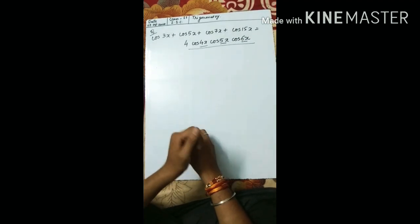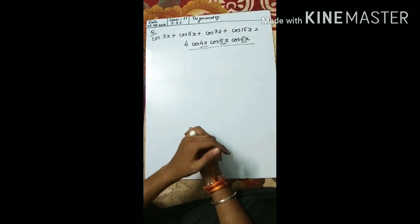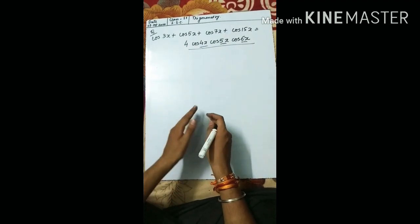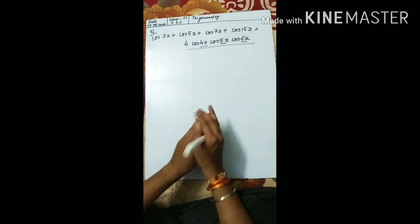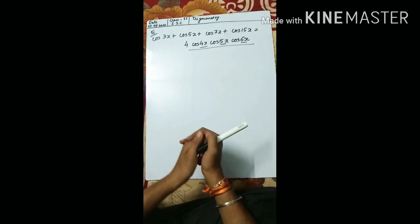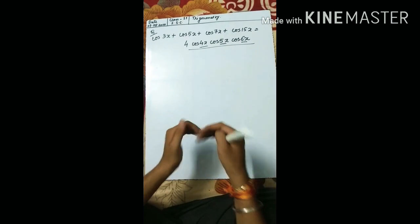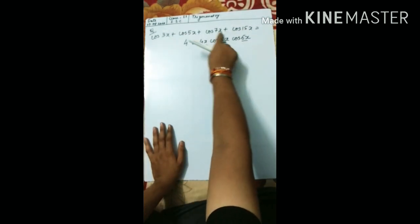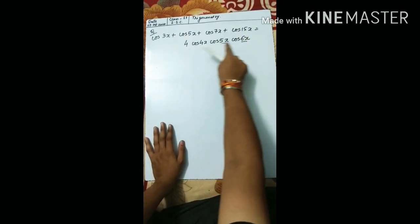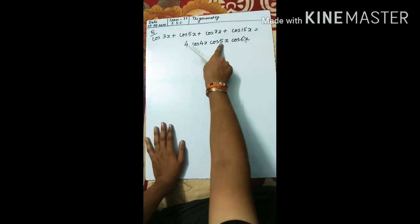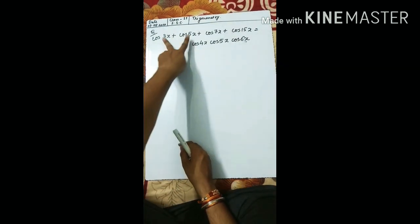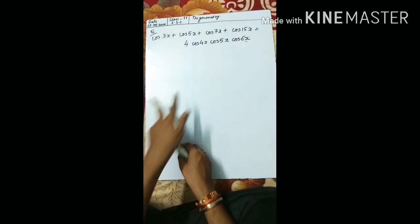Good morning dear students. As we have seen in exercise 3.6, the 4 identities stated in the previous video — we have also done questions. Now we are continuing with the same exercise and further questions. In front of you, you are given: cos3x + cos5x + cos7x + cos15x, and you have to prove this equals cos4x · cos5x · cos6x. Start by taking these two and these two as pairs and solve.